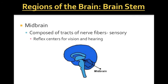As for functionality, the midbrain is in charge of sensory reflexes for vision and hearing. Recall that the thalamus is the relay sorter for the sense of feel, sending information to the parietal lobe. The midbrain does this for vision and hearing: sensory input from the eyes goes to the midbrain, which sends it to the occipital lobe; auditory input from the ears goes to the midbrain, which sends it to the temporal lobe.